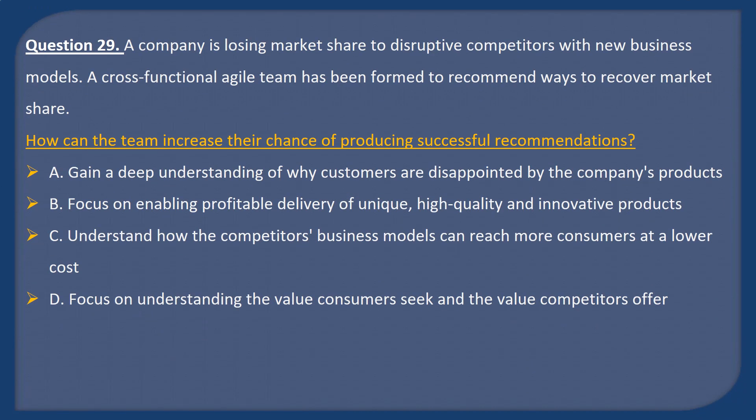Question 29. A company is losing market share to disruptive competitors with new business models. A cross-functional Agile team has been formed to recommend ways to recover market share. How can the team increase their chance of producing successful recommendations? A: Gain a deep understanding of why customers are disappointed by the company's products. B: Focus on enabling profitable delivery of unique, high-quality and innovative products. C: Understand how the competitor's business models can reach more consumers at a lower cost. D: Focus on understanding the value consumers seek and the value competitors offer.